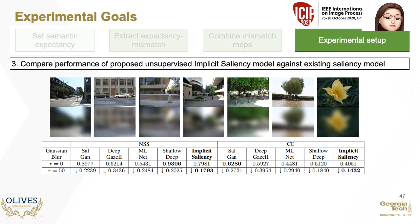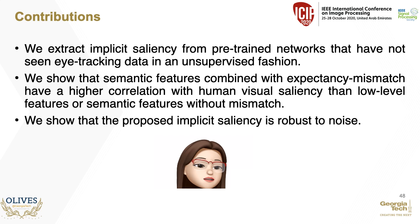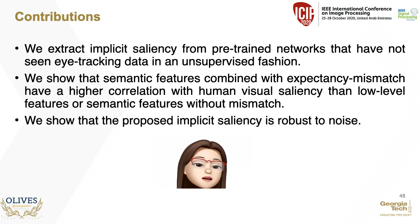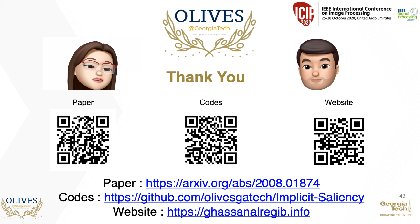This brings us to the final contributions of the paper. We extract implicit saliency from classification and detection networks never exposed to eye-tracking data. We use expectancy mismatch in semantic features in a top-down fashion. We motivated the use of gradient space to span the mismatch region and provided a methodology to combine all pseudo-saliency maps to obtain an unsupervised and robust implicit saliency detection model. Further details and code are provided on our lab website. Thank you all for tuning in.